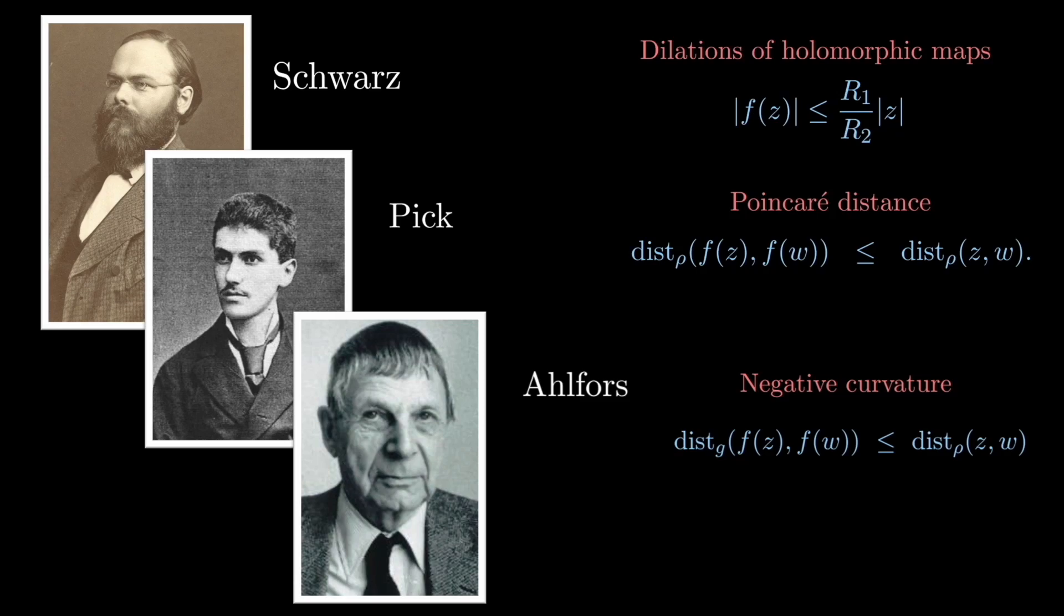But then Ahlfors says no, it's not even that. It's the fact that there's negative curvature underlying the metric associated with this distance function. And in this way, we see this lineage, this supersedence of each of these developments, and that's often how it's portrayed.